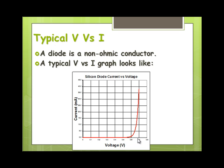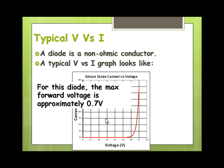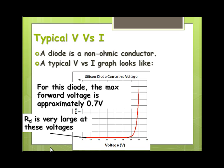And then it has this limiting voltage up here. So this maximum forward voltage in this case for this diode is 0.7 volts. So the resistance is really large at the low voltages, hence no current flowing. And then as we get up to our maximum forward voltage, the resistance of the diode gets really small.